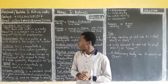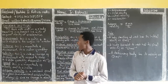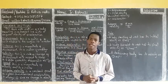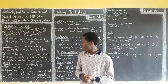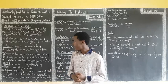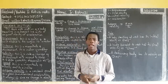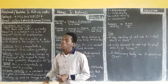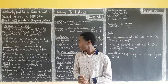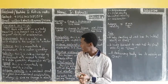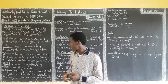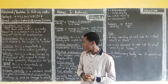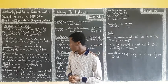Velocity is the rate of change of displacement with respect to time. It is a vector quantity, and the units for velocity are meters per second. Speed is the magnitude of velocity and it is a scalar.